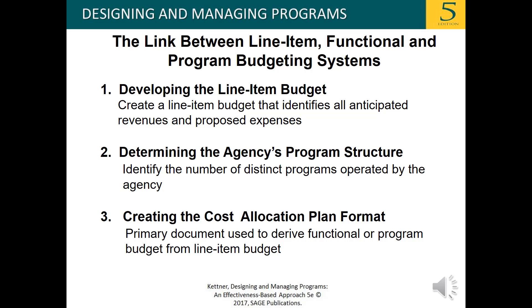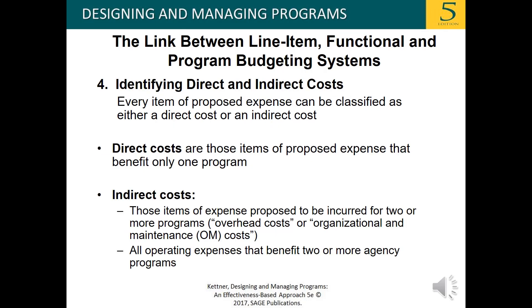Revisiting these steps: Step 1 is creating a line item budget that identifies all anticipated revenues and proposed expenses. Step 2 is identifying the number of distinct programs operated by the agency. Step 3 is the primary document used to derive a functional or program budget from the line item budget. Step 4 is that every item of proposed expense can be classified as either a direct cost or an indirect cost. Direct costs are items of proposed expense that benefit only one program.